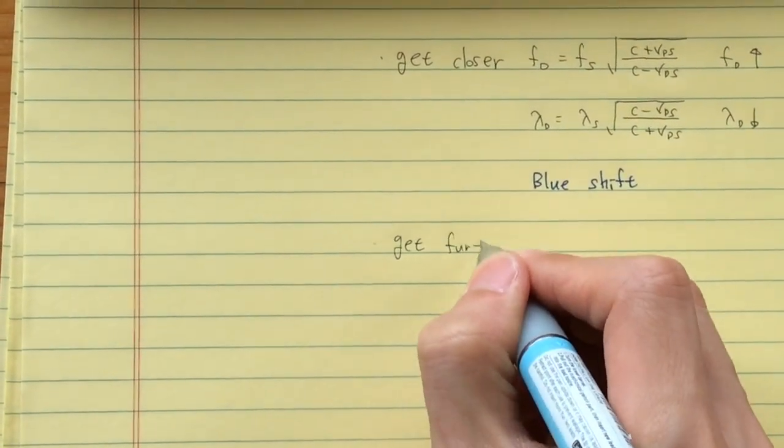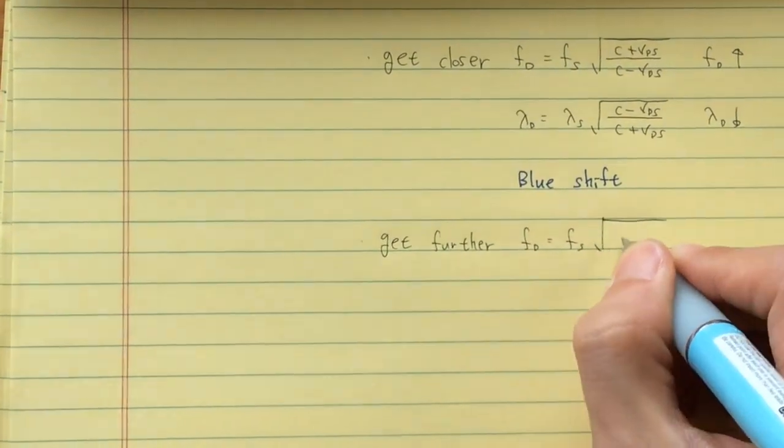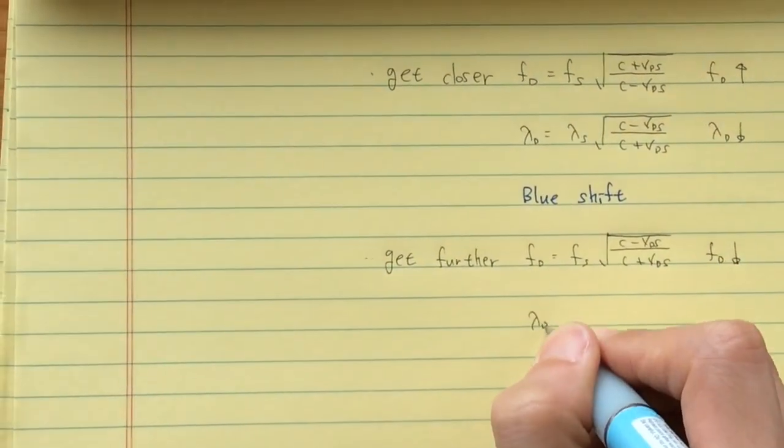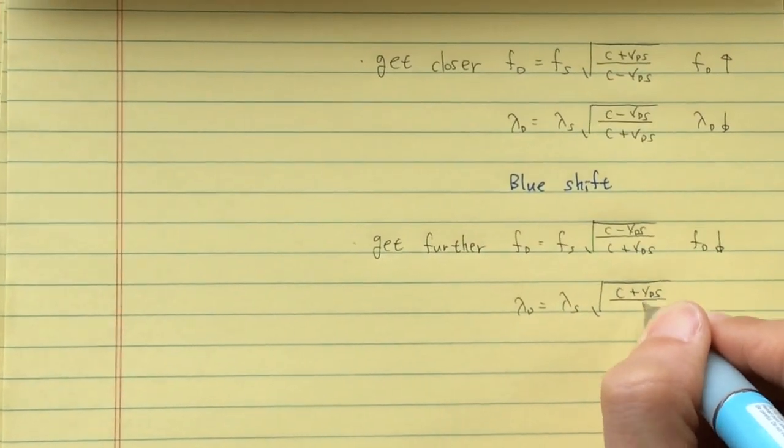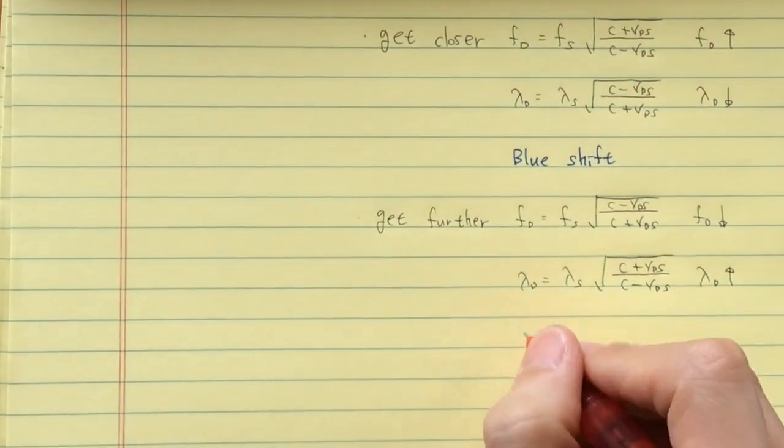When the detector and the source are getting further, the detected frequency is getting lower and the detected wavelength gets longer. This is called redshift.